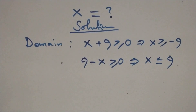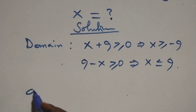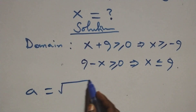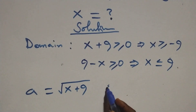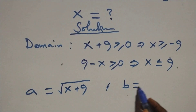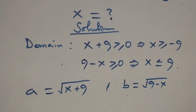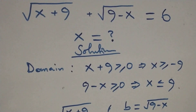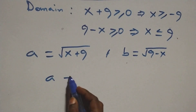Next step: let a be equal to the square root of x plus nine, and also let b be equal to the square root of nine minus x. Then we can write this equation in terms of a and b — that is, a plus b equals six.